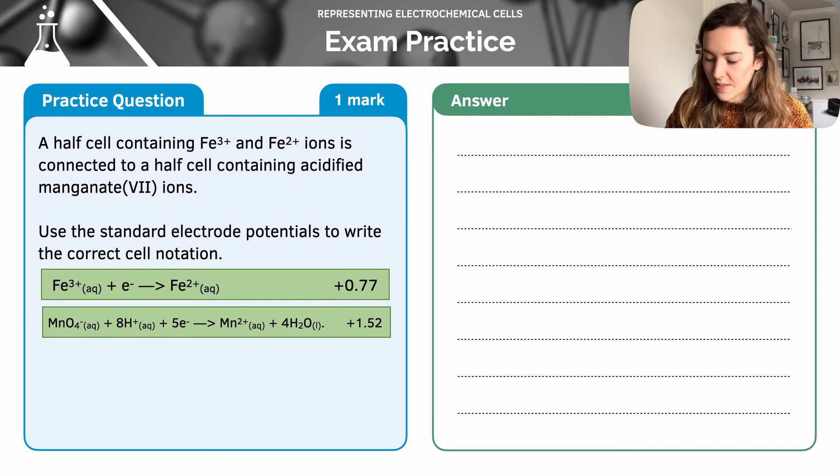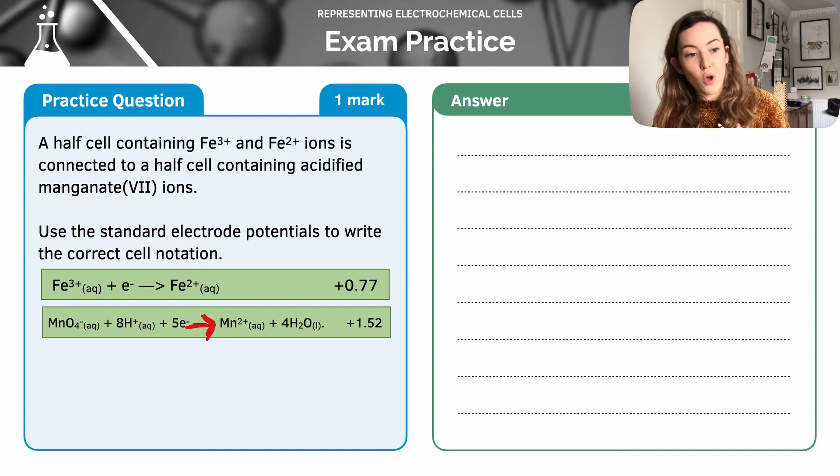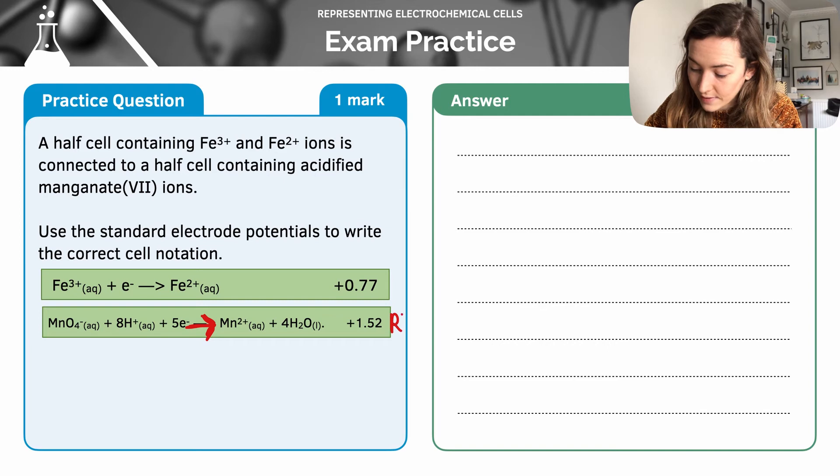So in this case, we can see that the manganate half cell has got a more positive electrode potential. And therefore, that's where the reduction reaction is going to occur. So I'm going to put a red arrow over because I know that we're going to be going in that direction with reduction. And we're going to show this on the right hand side.